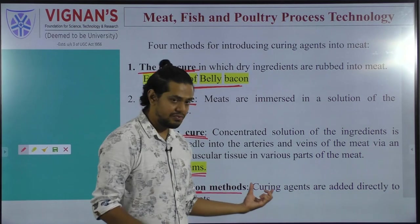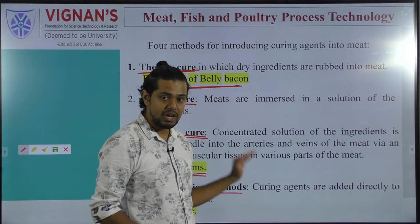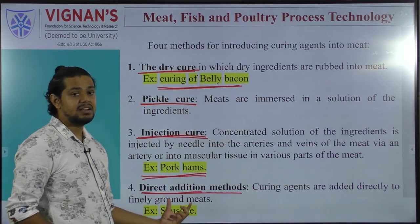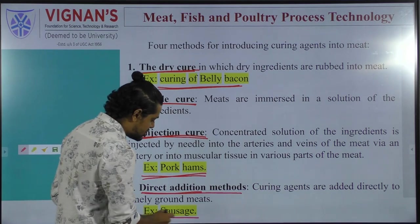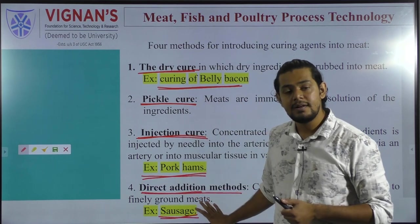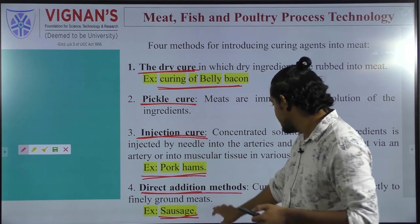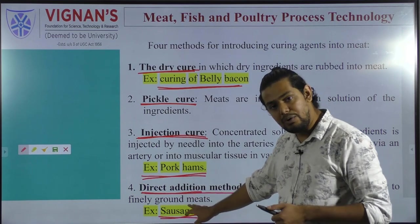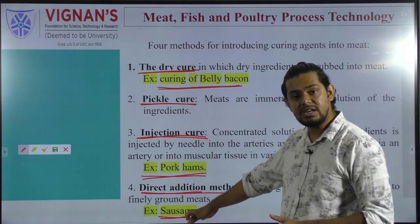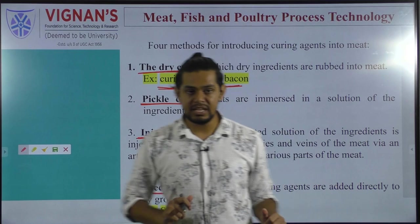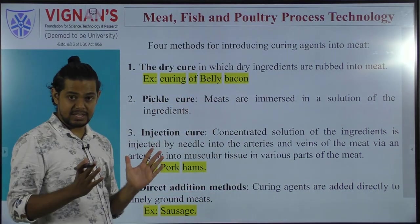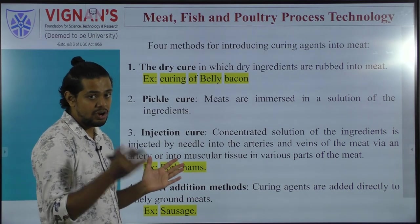In direct addition, salt is added directly to finely ground meat — sausages are a good example. These are the different techniques employed at industrial scale for the addition of salt to meat and meat products.